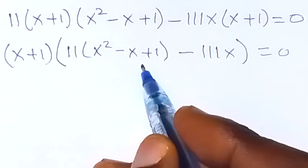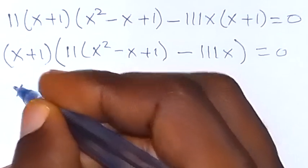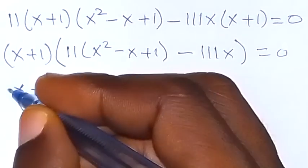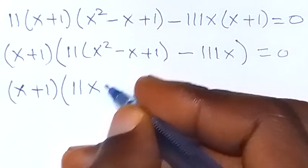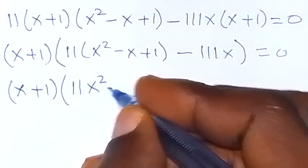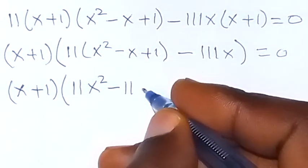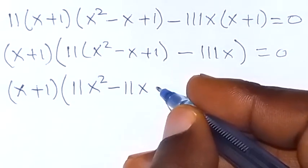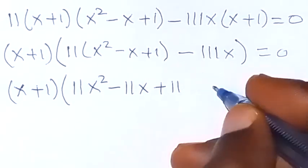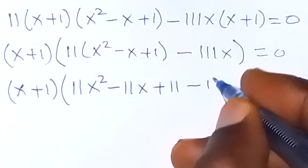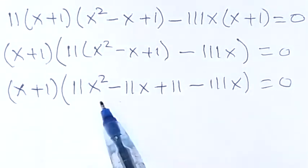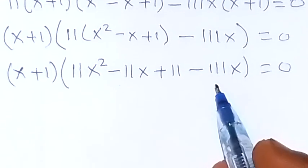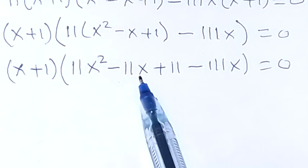We can simplify this bracket by expanding 11 through: 11x² minus 11x plus 11, then minus 11x, which equals zero. Adding like terms together gives us the combined x terms.